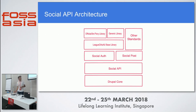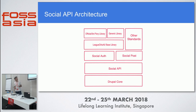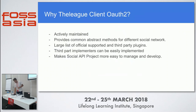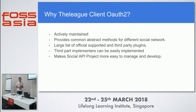Drupal core uses Symfony, and there is an API that Drupal core provides to modules and themes. Social API was built on top of Drupal core, and it extends Social Auth and Social Post, which utilize the League OAuth2 base library. You can integrate your own third-party implementers using generic libraries, and other standards like OpenID Connect are also supported. The League library was chosen because it is actively maintained, provides common abstract methods for different social networks, has a large list of officially supported and third-party providers, and makes the Social Initiative project easier to manage and develop further.